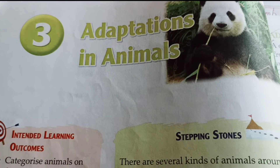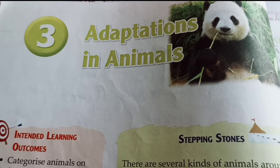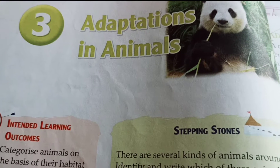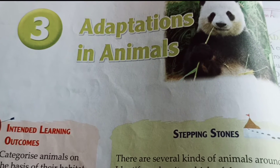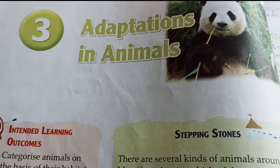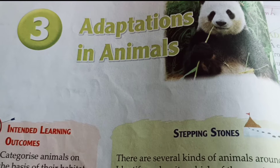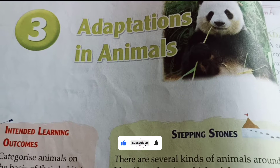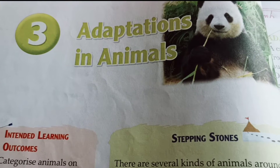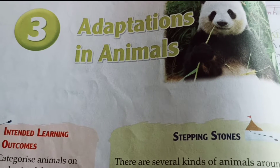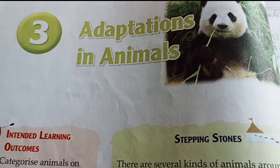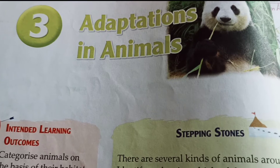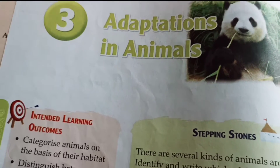Hello students, welcome to West Bengal English Medium Guide. Today we are going to solve Chapter 3: Adaptations in Animals from Class 4 Science book, CBSE board. We will solve the exercise question answers and also try to solve some inside question answers from this chapter. Please like the video, subscribe the channel, and press the bell icon. Check the description box or playlist for other videos. Let's start.